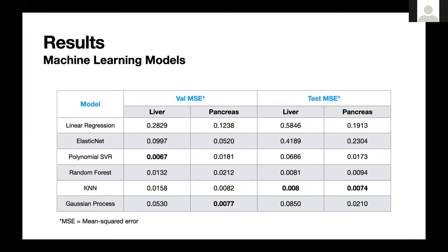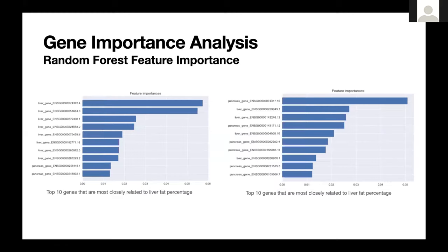These are our results — predictions based on the metadata (age, sex, Hardy scale) and gene expression data. The lower MSE — mean squared error — is better, and the bolded entries are the best predictions. For the test set, the best model was K-Nearest Neighbors. We also looked into gene importance analysis using random forest feature importance, where important features are those most closely related to fat percentage in liver and pancreas. The left plot shows the top 10 genes most closely related to liver fat percentage, and the right shows the top 10 for pancreas fat. Importantly, we can predict these genes without knowing the fat percentage of the other tissue.